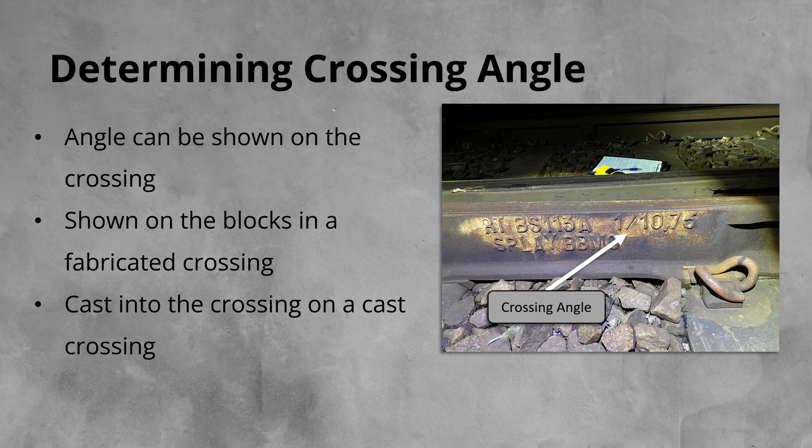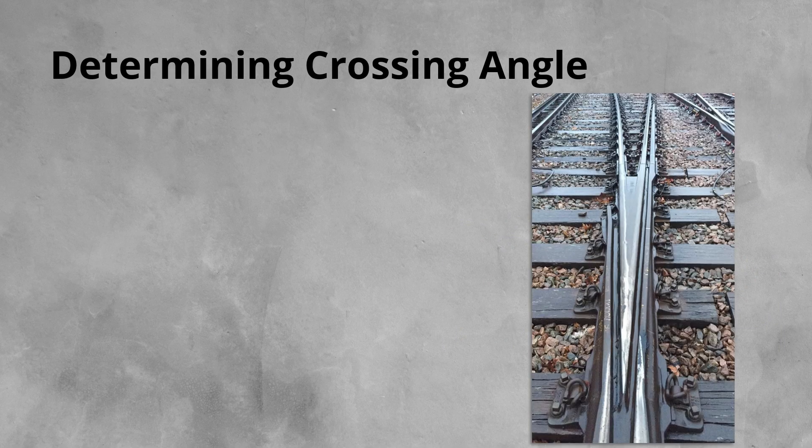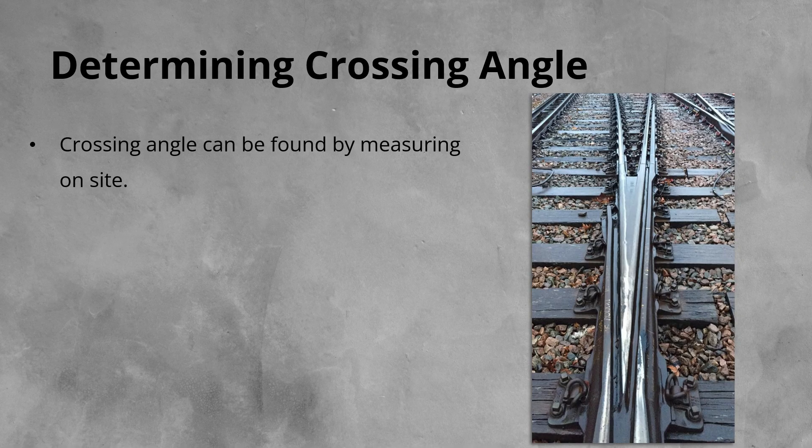If, for some reason, the angle cannot be found on the crossing anywhere, it can be determined on site by measuring. There are a number of ways to obtain the crossing angle by measuring, with each country having a preferred method.